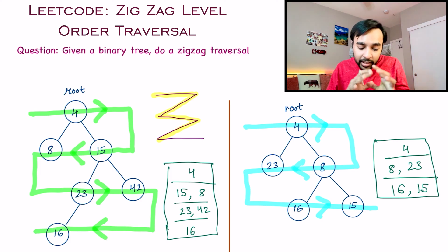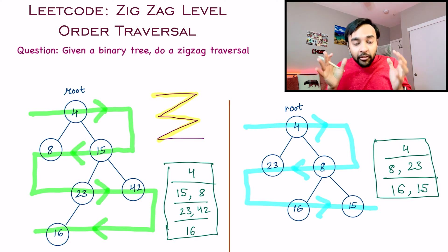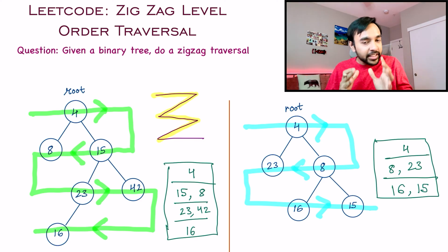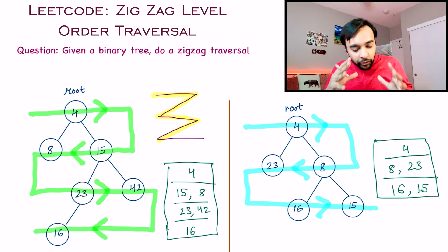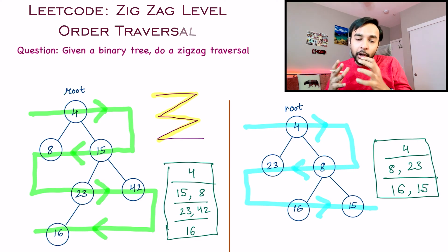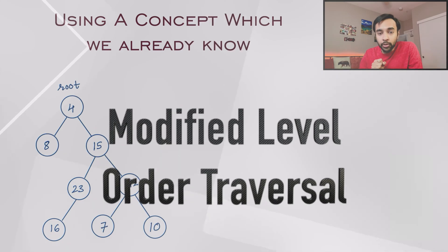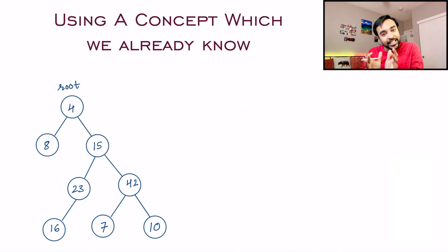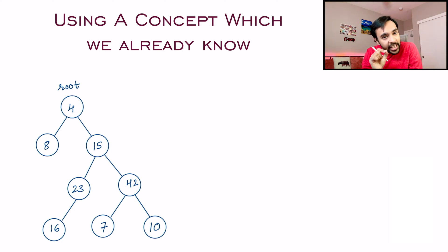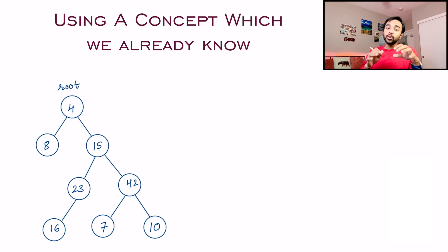If you feel you have understood the problem statement, feel free to take a shot at it. Otherwise let us dive into the solution. You have this binary tree in front of you and you're asked to do a zigzag level order traversal. As the name suggests it already has level order traversal in it. If you're new to level order traversals, I would highly recommend you stop this video and watch my video on level order traversals first.